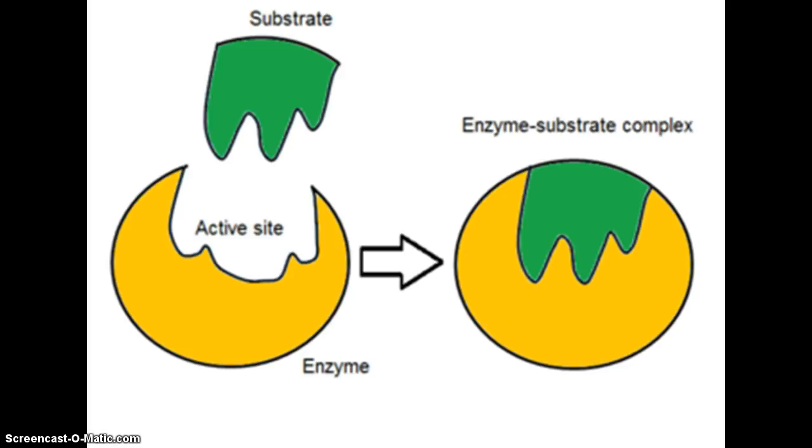This slide is just meant to show some of the basic anatomy, you would call it, of an enzyme and another important molecule that kind of relates to an enzyme known as a substrate. So first of all, right down here, this yellow shape, this big yellow blob, is your enzyme. So this represents a three-dimensional protein.